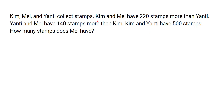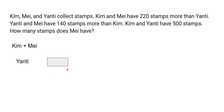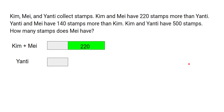For the model method, we first consider the condition: Kim and May have 220 stamps more than Yanthi. Since Yanthi is the reference ('more than Yanthi'), we draw a model for Yanthi first, then for Kim and May, showing that Kim and May have 220 more than Yanthi.